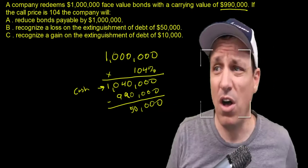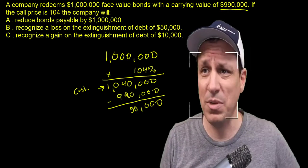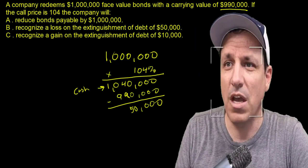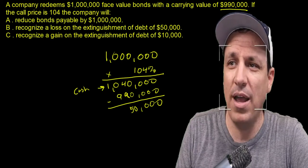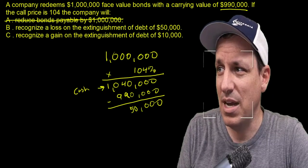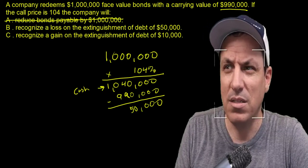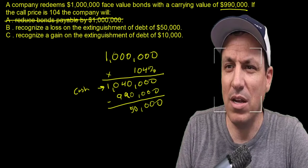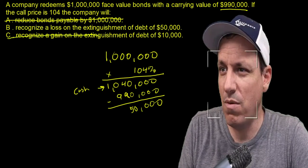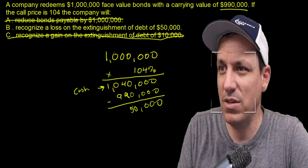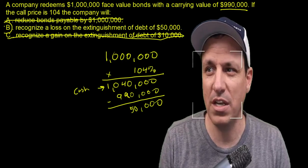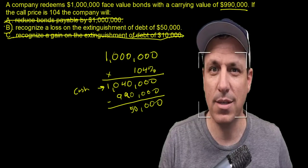So this right here - the company will reduce bonds payable by a million? No, that's not right because bonds payable isn't at one million, it's at $990,000, which is what the carrying amount is. Recognize a gain on the extinguishment of debt? No, that's not right. They're not going to recognize a gain on it - you got that if you did the numbers wrong. The correct answer is B: recognize a loss on the extinguishment of debt. That is the correct answer.